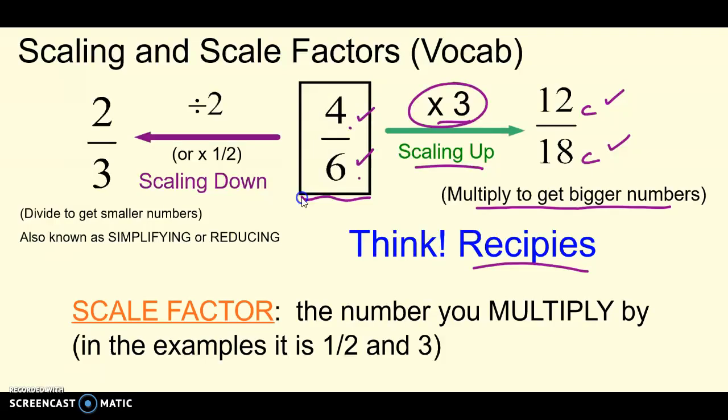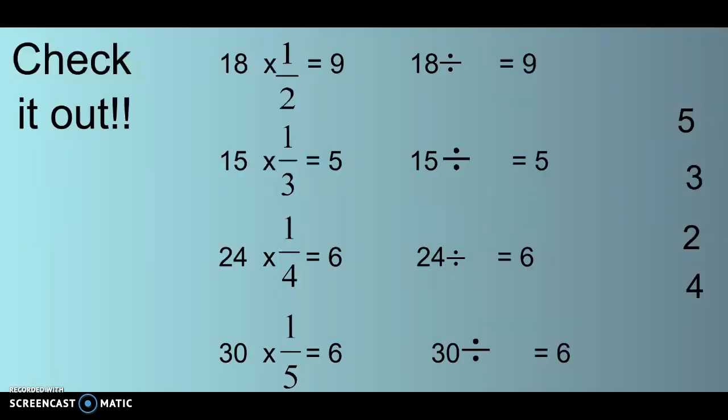Or maybe I only have two people coming over for dinner and I don't want leftover so I want to scale my recipe down. So instead of 4 cups and 6 cups maybe I divide both the ingredients by 2. So now I'm only going to use 2 cups and 3 cups in my recipe. So scale it down means divide to get smaller numbers. This is also known as simplifying or reducing. We've done this a little bit before but now we have a term for it: scale factor. A scale factor is the number that you multiply by. In this example my scale factors are 3 - I scaled it up by multiplying by 3 - and one half because I multiplied my recipe by one half. So scale factors are what you multiply by to get your new recipe.